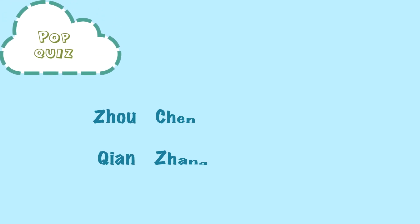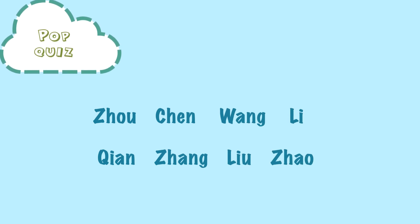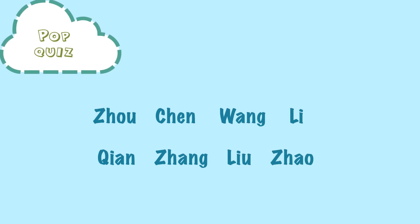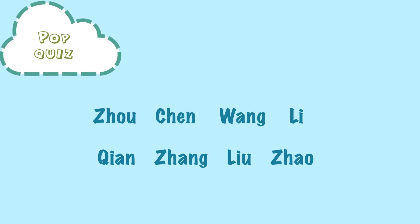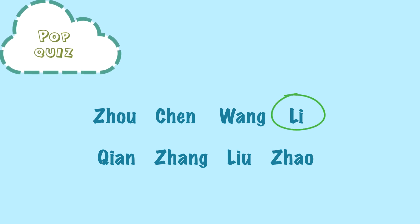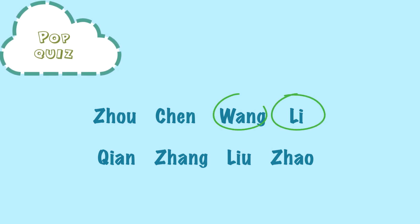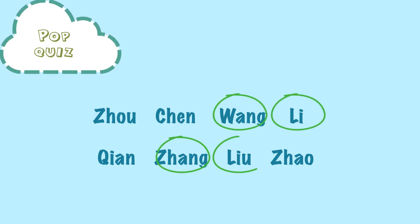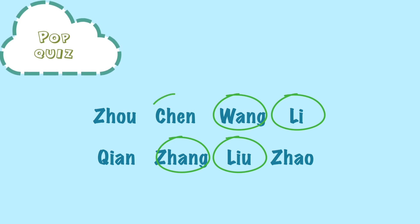Alright, it's pop quiz time again! Pause your video if you need to and circle the names that you think might be the top 5 family names. You ready? The top 5 family names in China are Li, Wang, Zhang, Liu, and Chen.